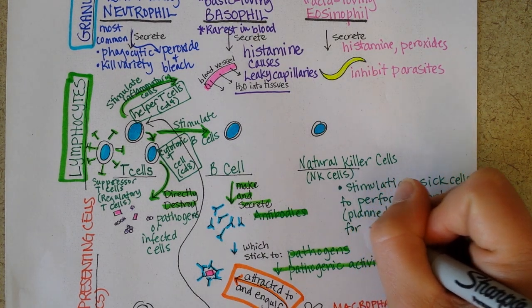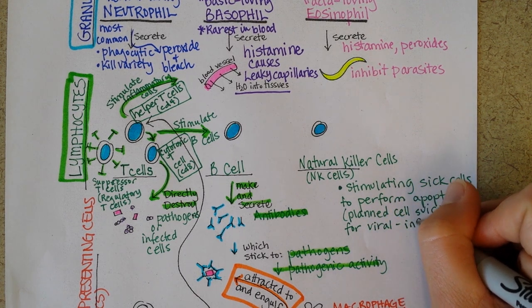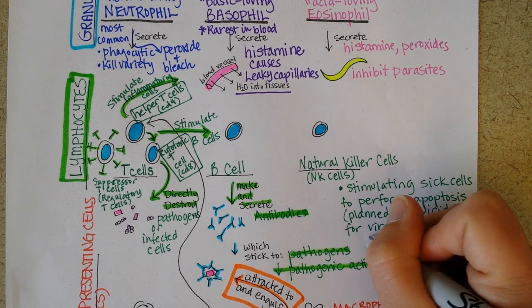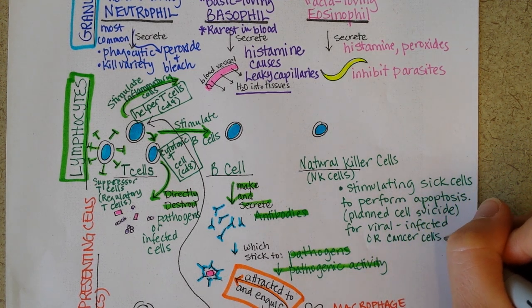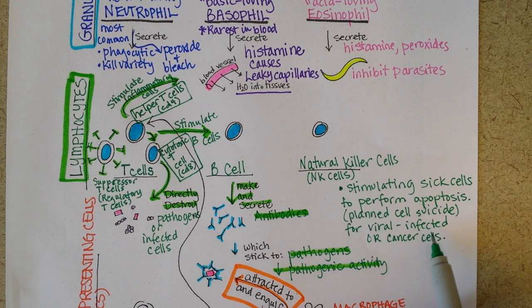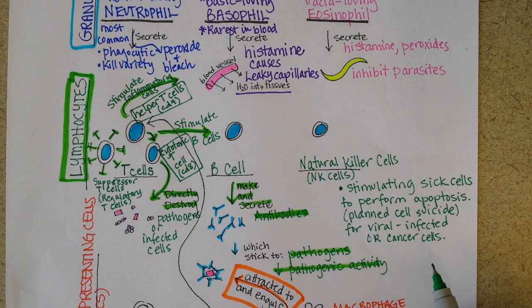Especially for viral infected or cancer cells. So NK cells are important in destroying cells that are infected with viruses or cells in the body that have become cancerous. We all have cells like this sometimes, but cancer only results if the immune system is not able to keep those cancer cells in check.